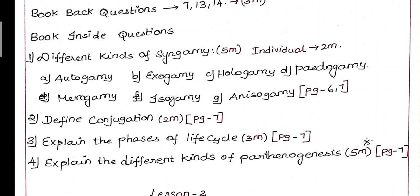First question: different kinds of Syngamy, that means Autogamy, Exogamy, Hologamy, Paedogamy, Merogamy, Isogamy, Anisogamy. So the question is explain the different types of Syngamy. These are 5 marks total. Sometimes they ask define Autogamy, define Exogamy, define Hologamy, this is one part as individual. In the book, page number 6 and 7.